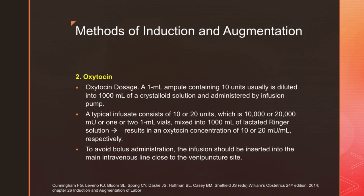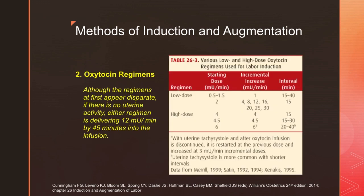For oxytocin dosage, a 1 ml ampule containing 10 units is usually diluted in 1 liter of crystalloid solution and administered by infusion pump. A typical infusate consists of 10 or 20 units of oxytocin — that is, 10,000 or 20,000 mU, or 1 or 2 vials — mixed into 1 liter of lactated Ringer's solution, resulting in an oxytocin concentration of 10 or 20 mU per ml respectively. To avoid bolus administration, the infusion should be inserted into the main intravenous line close to the venipuncture site. Both low-dose and high-dose oxytocin regimens can be used, though the high-dose regimen carries a higher risk of uterine tachysystole.